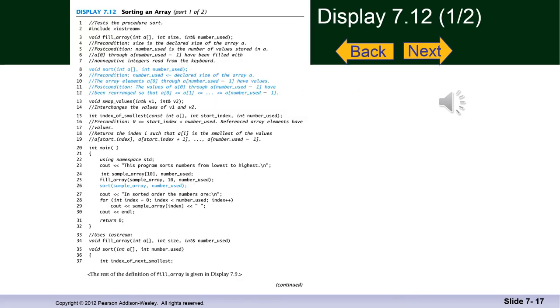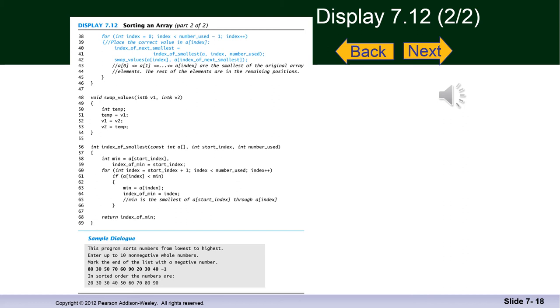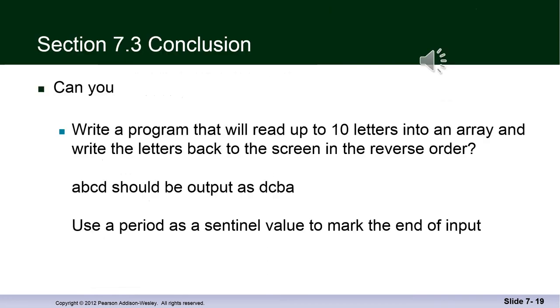The next two slides show the coded implementation of the sort program. And you'll see how it's called in line 26, sort, and it's passed an array and a number_used. And in the next slide, you'll see more and a sample dialogue. Stay tuned. Although I strongly urge you to pull this program down from web study as a CPP, put it in a project, code it. And there are some functions defined in, I believe, 7.9 and 7.7 that you'd have to pull in and get it to run. There's a sample dialogue at the bottom. The user enters up to 10 non-negative whole numbers and uses a sentinel value as a negative number. And it sorts those in ascending order.